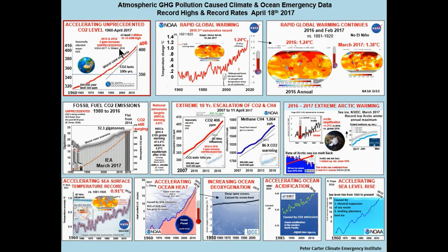I'm going to tell you what these data sets are. This is carbon dioxide concentration from Scripps Institute of Oceanography in the US, running from 1960 to April 2017. This here is global warming — an 18th of January 2017 release by NASA GISS and NOAA, the US-based National Oceanic and Atmospheric Administration. This temperature increase plot is converted to a baseline of 1881 to 1920. That's important because when we're talking 2 degrees or 1.5 degrees, this is the baseline we're referring to.